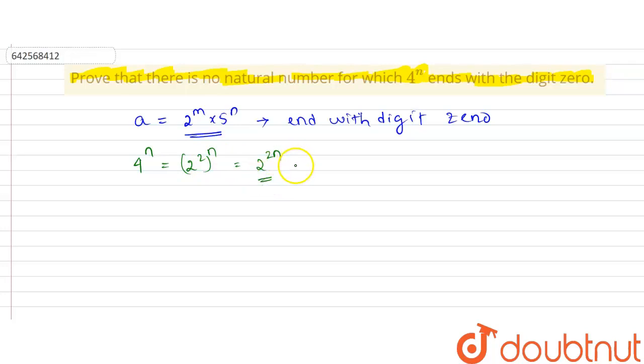So it will not end with digit 0 because it is not expressed in the form of 2 to the power m multiplied with 5 to the power n. Thank you.